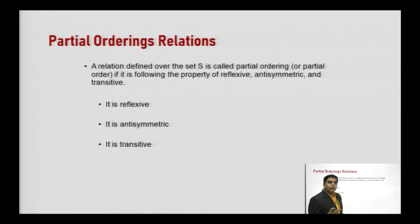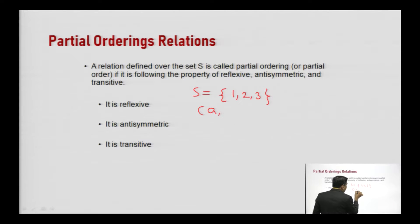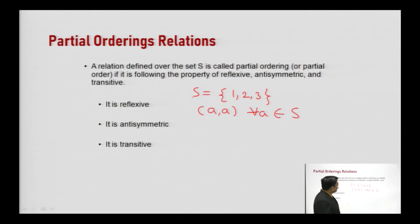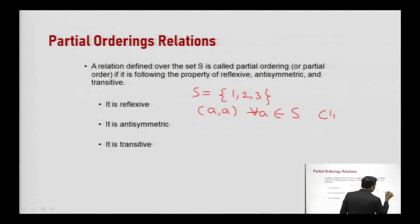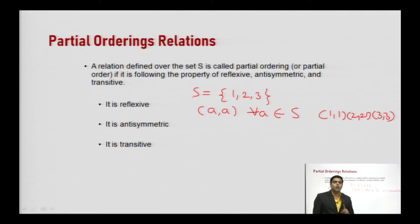A relation is reflexive when for all 'a' belonging to set S, there exists (a, a). Suppose we have a set S = {1, 2, 3}. Then for reflexivity, we must have the pairs (1,1), (2,2), and (3,3). These are the minimum requirement. If we have additional elements beyond these, the relation is still reflexive.